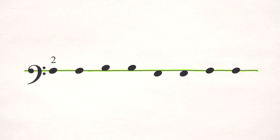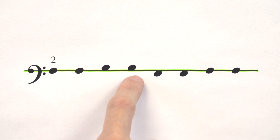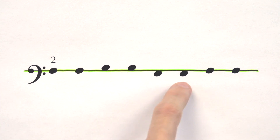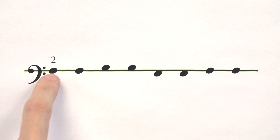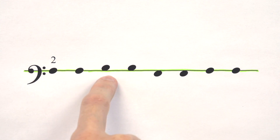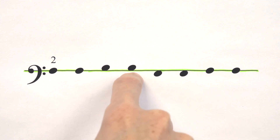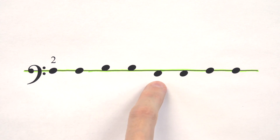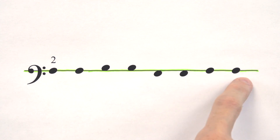Now can you tell me the letter names? It starts on F. The correct answer is F, F. Then it steps up to G — because G is a step above F — G, then it goes below F which is E, E, E, and then back to F, F. Now let's try playing it on the piano.